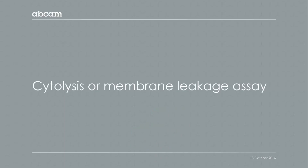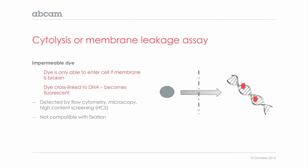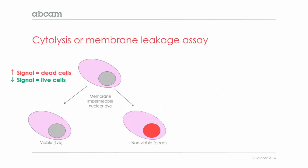I will now talk about the cytolysis assay. The principle is slightly different depending on whether we use an impermeable or a permeable dye. An impermeable dye will enter the cell only when the cell membrane is broken, then diffuse into the nuclei and become fluorescent when it cross-links to DNA. This type of assay is not compatible with fixation, as the fixation process itself affects the integrity of the cell membranes. So with an impermeable dye, a higher signal denotes dead cells, whereas a lower signal means live cells.